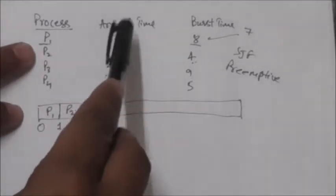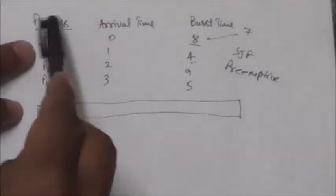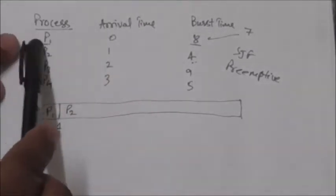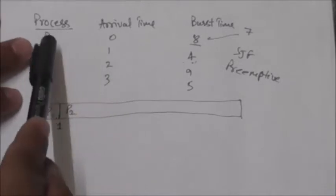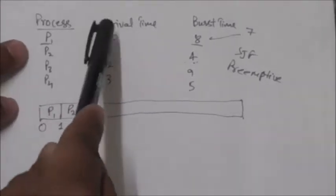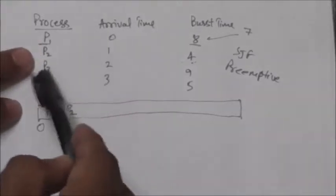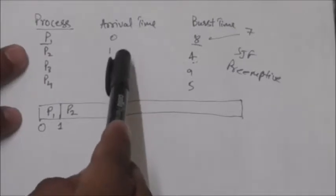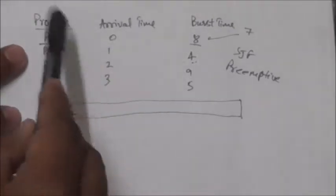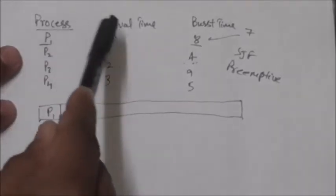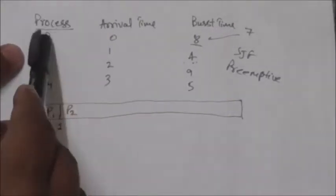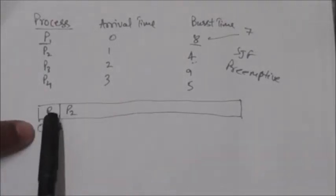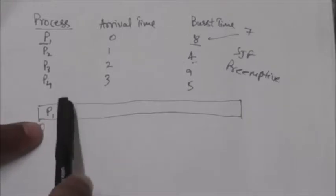At time 0, there is only one process in the ready queue — process P1 — since the arrival times of P2, P3, and P4 are 1, 2, and 3. So the CPU is allocated to process P1 at time 0.